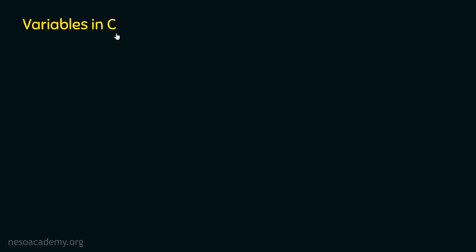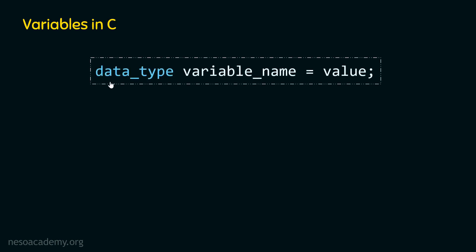What is a variable in C programming language? In C, a variable is a memory location where we can store some value. We can create a variable using the following syntax: specify the data type, add a space, then the name of the variable, and use the assignment operator to assign a value. For example, we can write int x equal to 10.